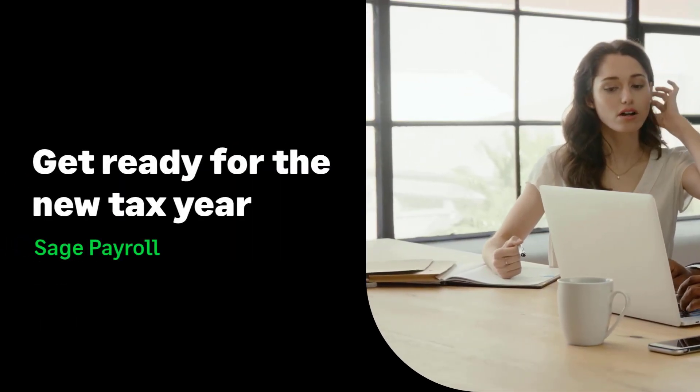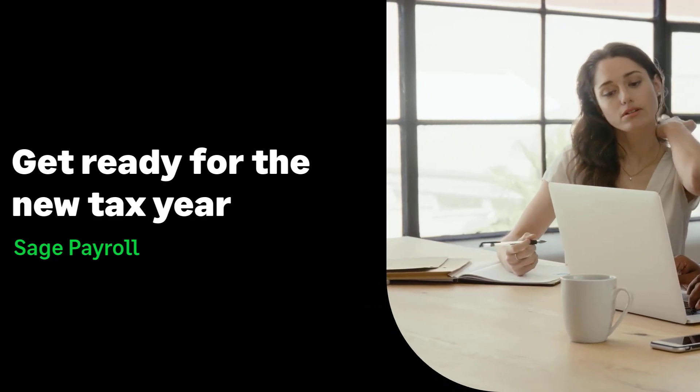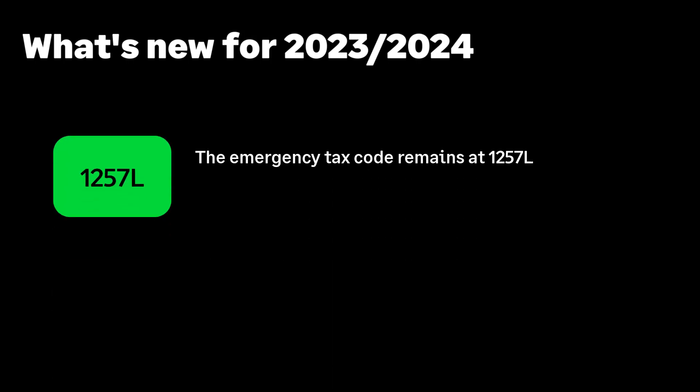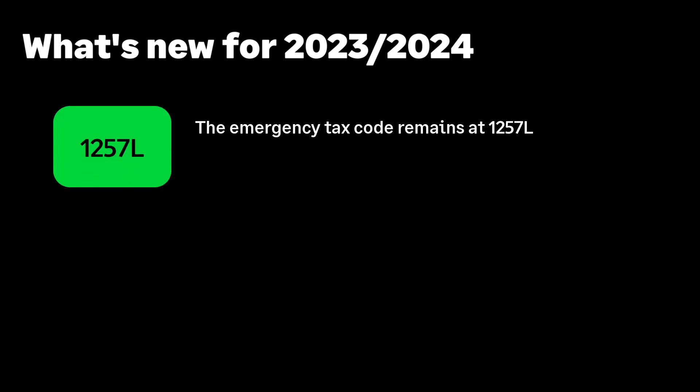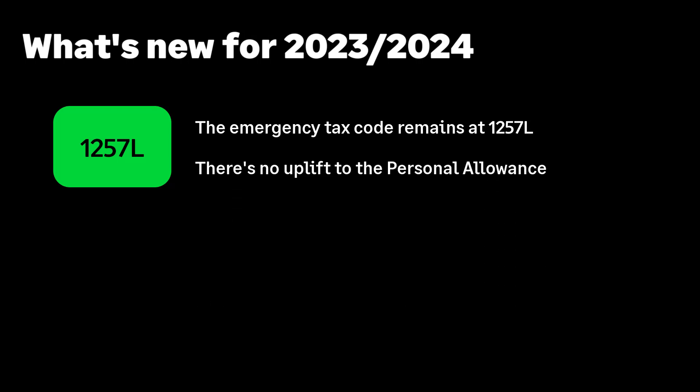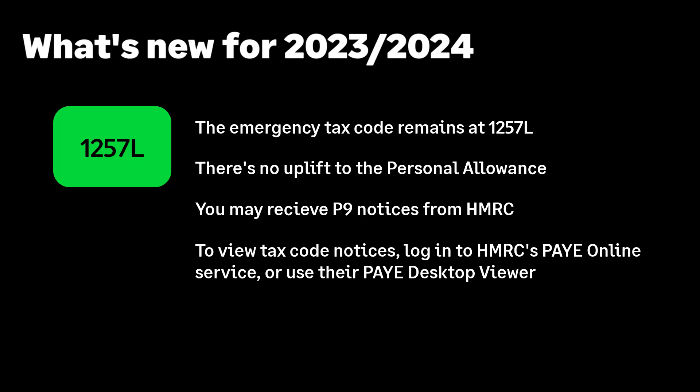Starting 2023-2024, we'll now look at some of the changes for the new tax year. The emergency tax code remains at 1257L. Tax code personal allowances remain the same, unless specifically instructed by HMRC. Any tax code notices you receive from HMRC should be updated in Sage Payroll.